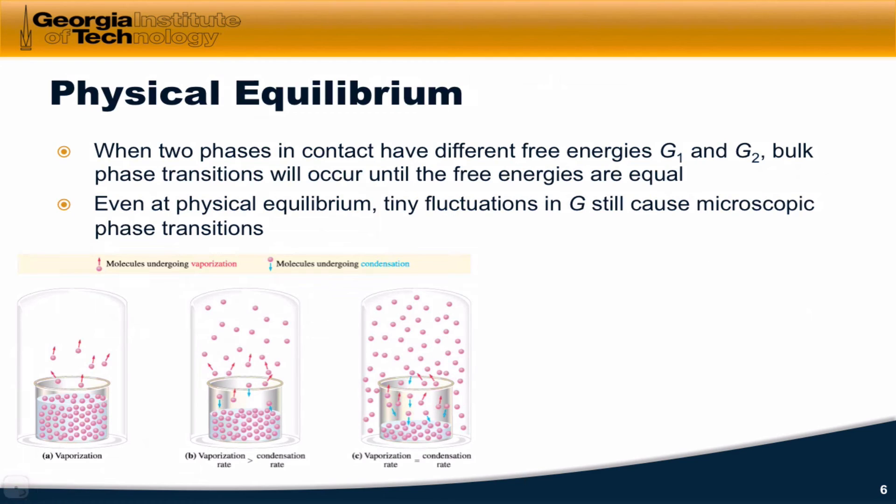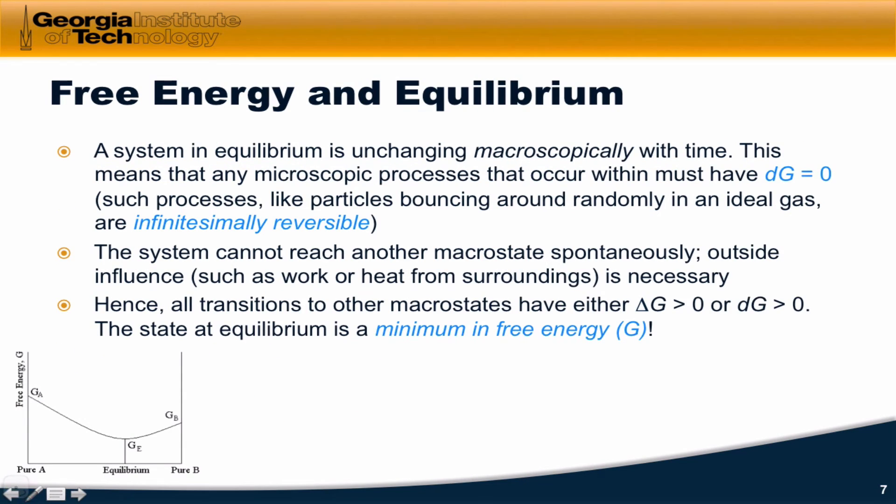What this example of physical equilibrium shows us is that there's a connection between free energy and equilibrium. Since a system that's in equilibrium is unchanging on the macroscopic level, that means that no macroscopic processes have delta G less than 0. There are no spontaneous processes that can occur in a system at equilibrium. Any microscopic processes that do occur must have DG equal to 0.